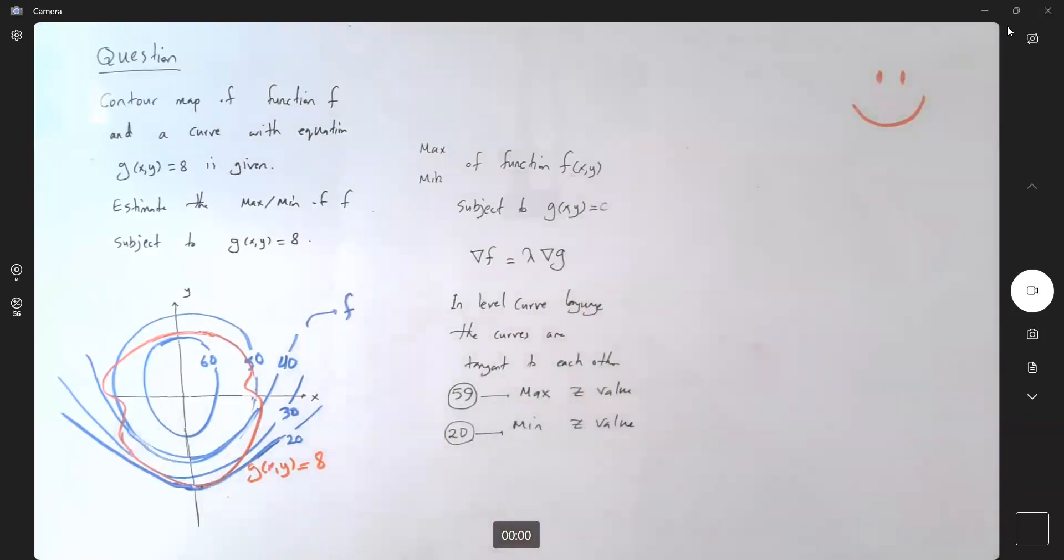So that's how we read the contour maps when we have a function subject to another function. Let's see you next time.